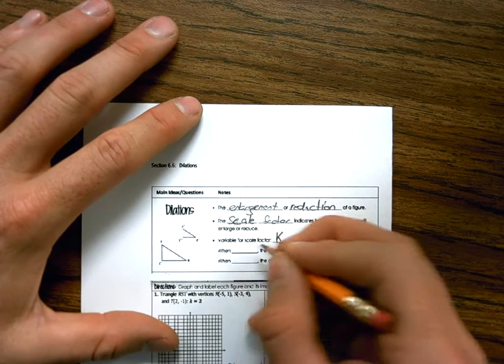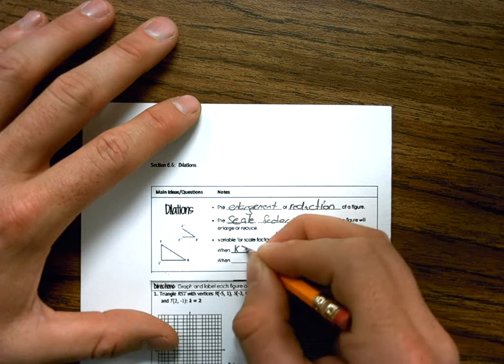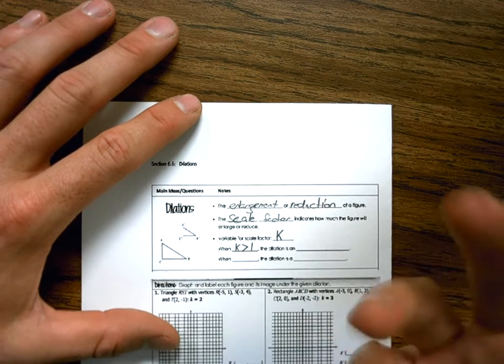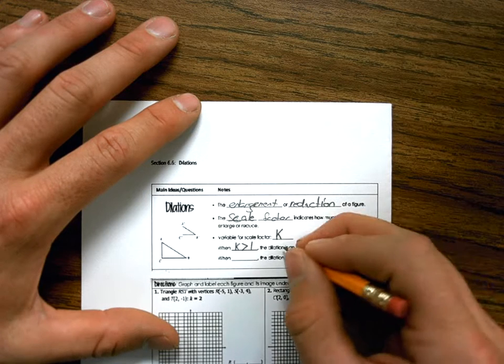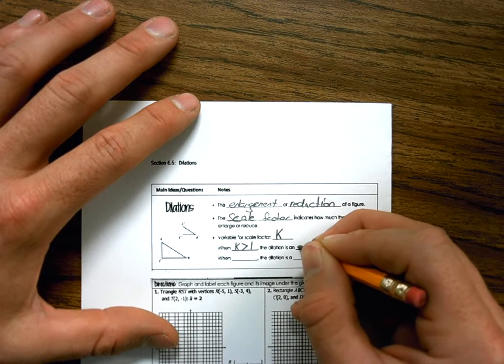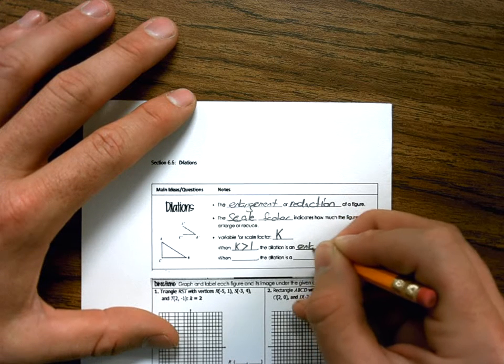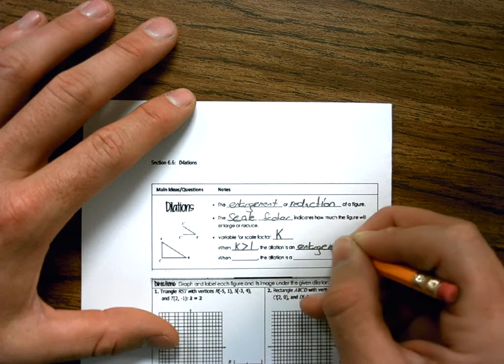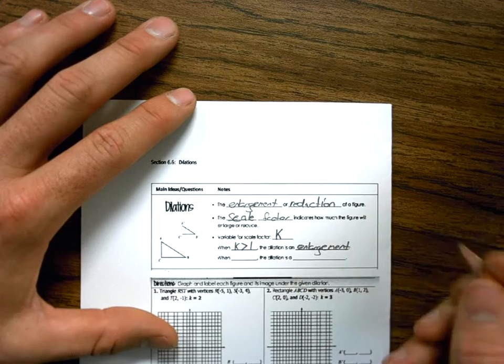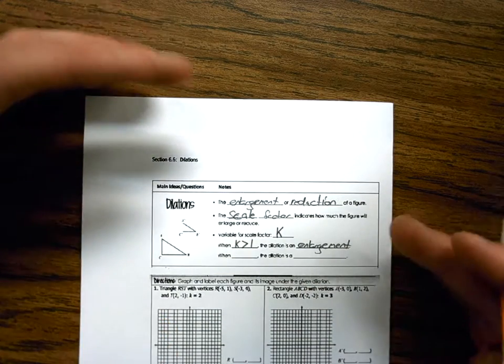Okay, when K is greater than 1, when my scale factor is greater than 1, the dilation is an enlargement. Okay, so if my scale factor is 2, my figure is getting bigger.